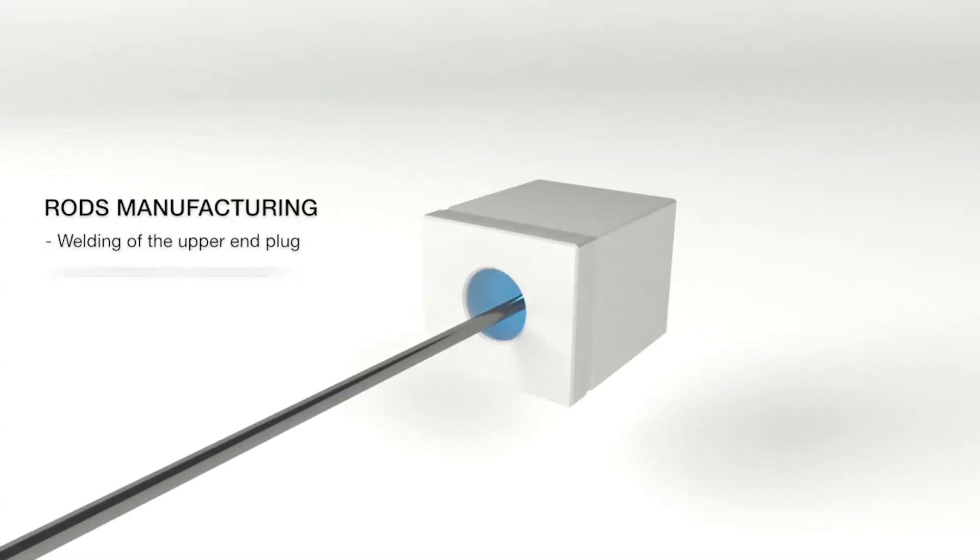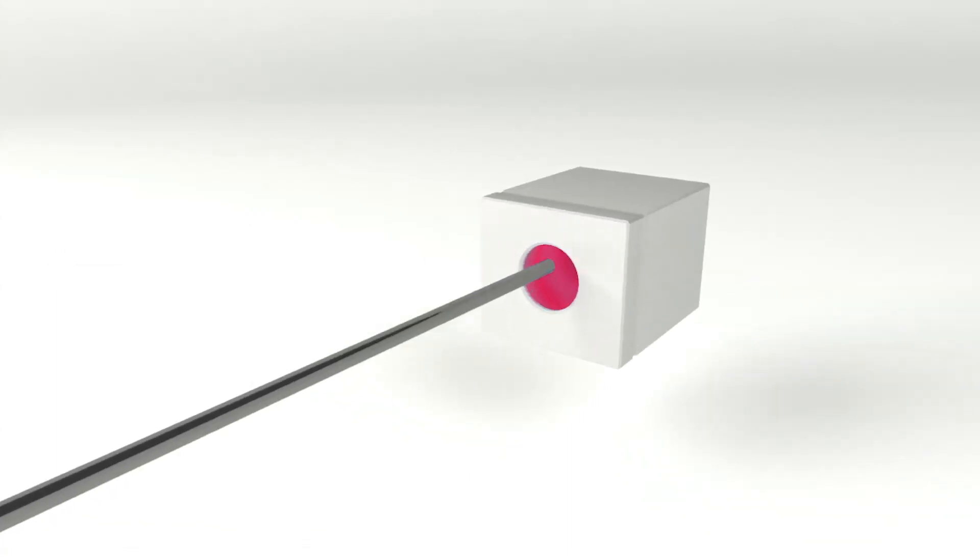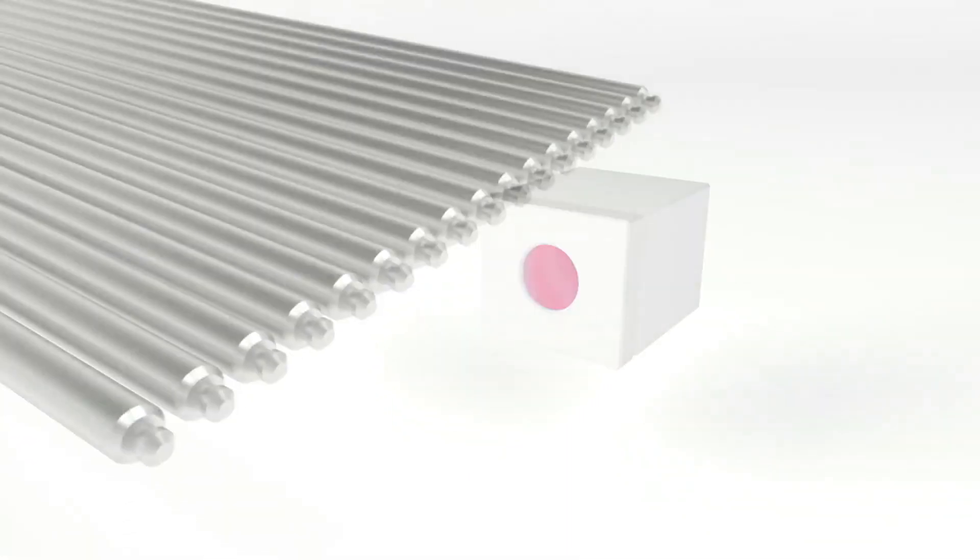Sealed with welded end plugs, the rods will constitute the first safety barrier during the reactor operation. Sealing is rigorously verified.